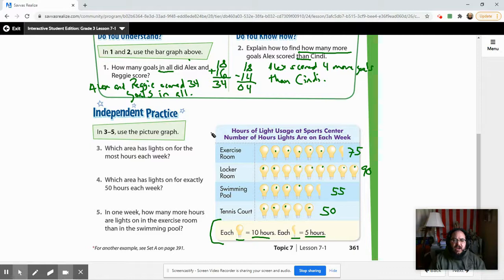So which area has lights on for the most hours each day? Well, that would be the locker room, right? Because that one had 90 hours, 90 hours. Which area has lights on for exactly 50 hours each week? The only one that meets that criteria that matches that one is the tennis court, right?